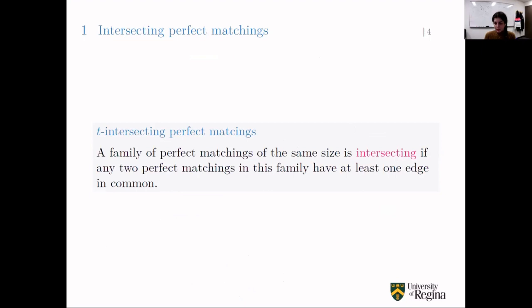A family of perfect matchings of the same size is called intersecting if any two perfect matchings in the family have at least one edge in common. More generally, a family is called t-intersecting if any two perfect matchings share at least t edges in common. The focus of this talk is on intersecting perfect matchings, though we do have good results on t-intersecting perfect matchings and analogs of the EKR theorem for that setting.